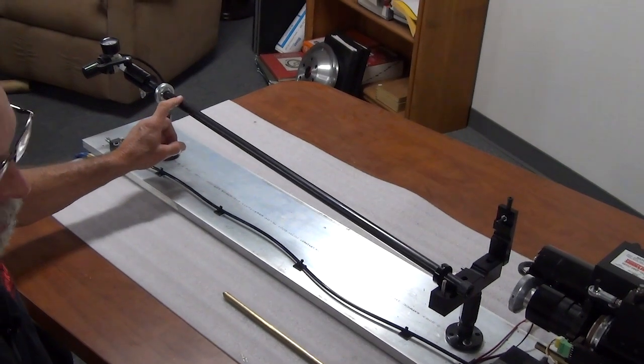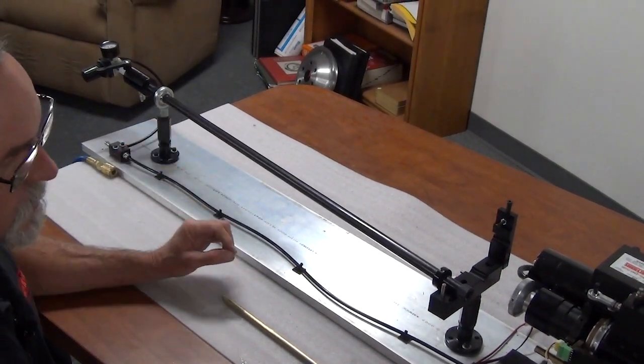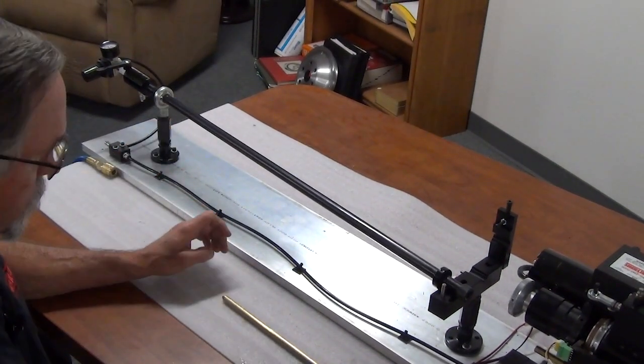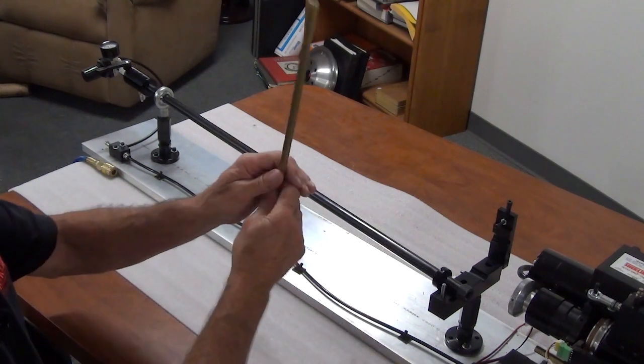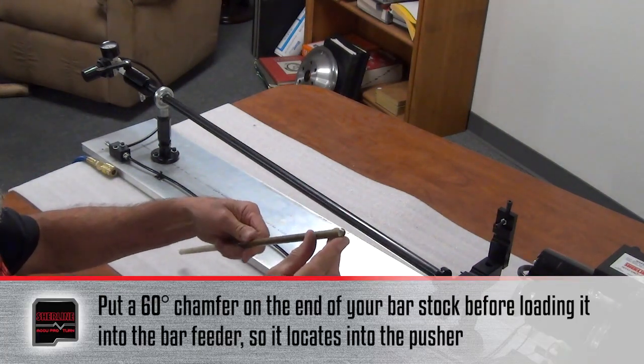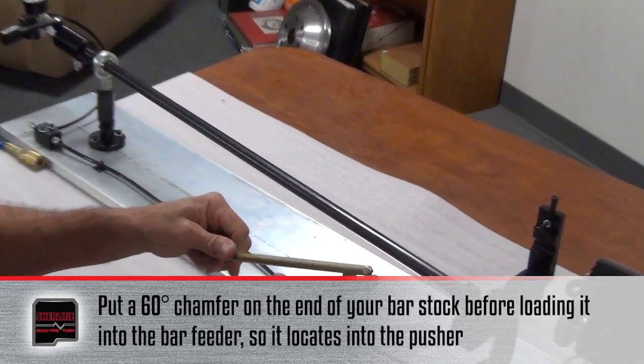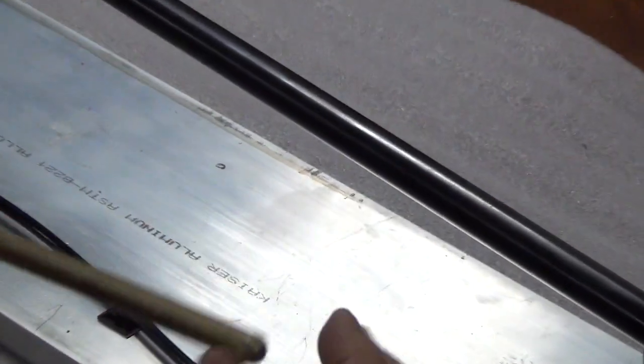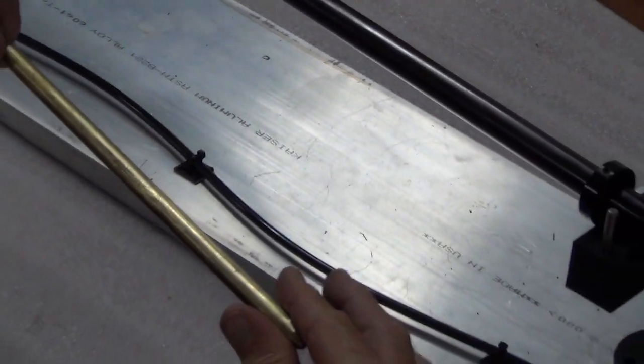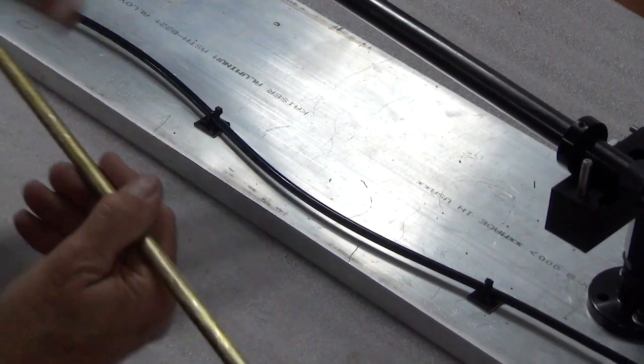The plunger inside the bar pusher has got a 60 degree internal taper in it so you want to chamfer the end of your bar stock approximately 60 degrees so that it locates inside the pusher and doesn't flop around inside the bar feeder tube.